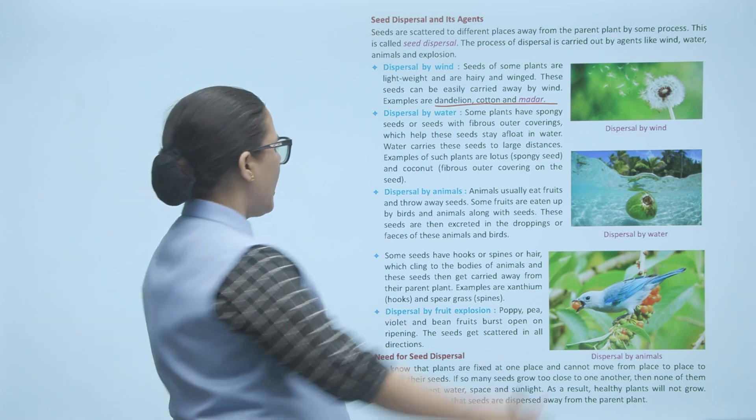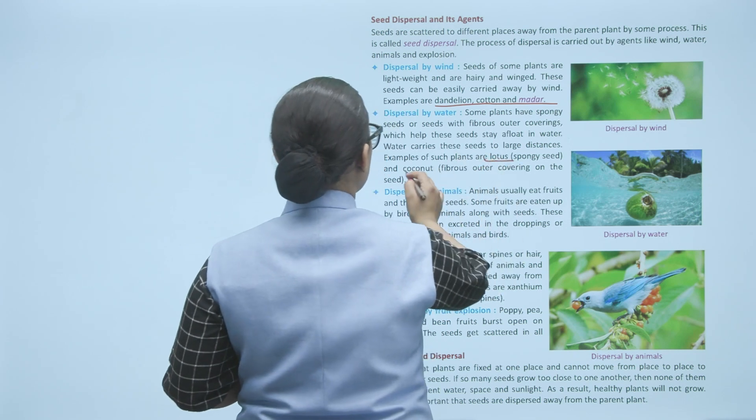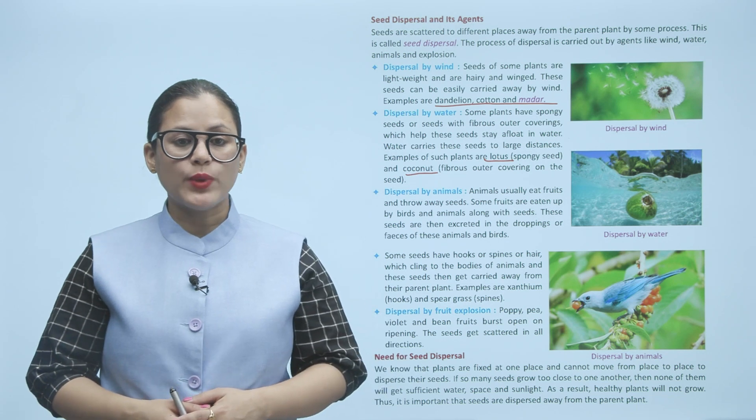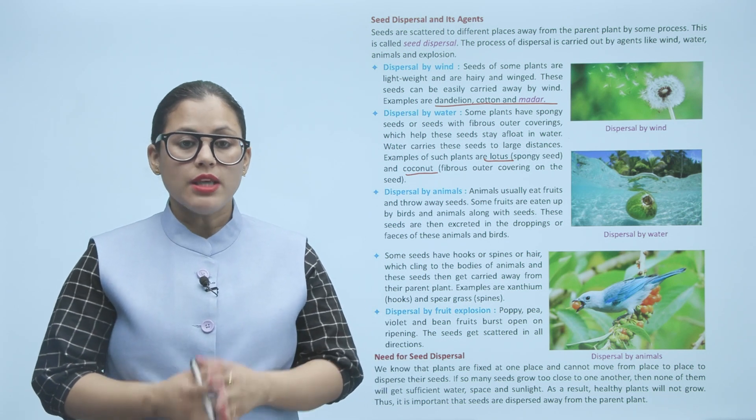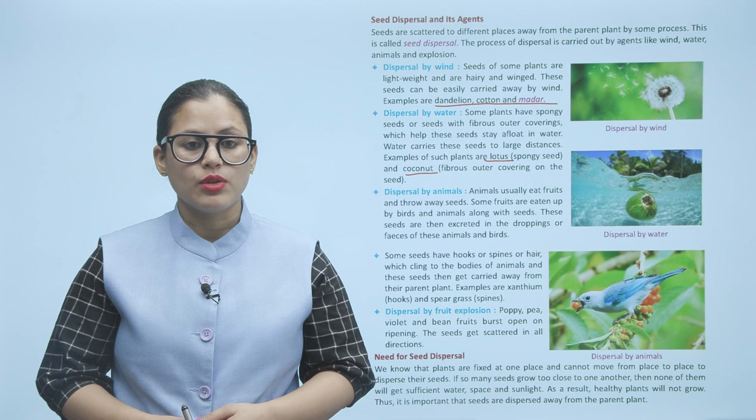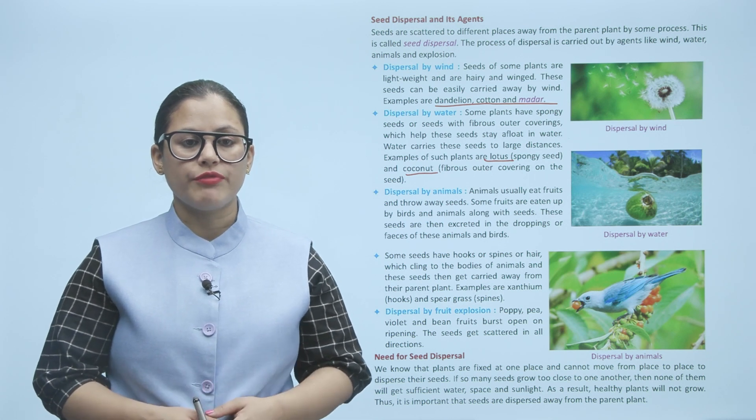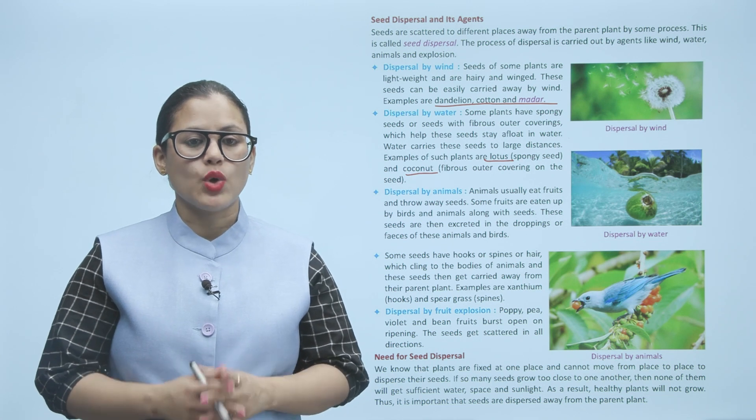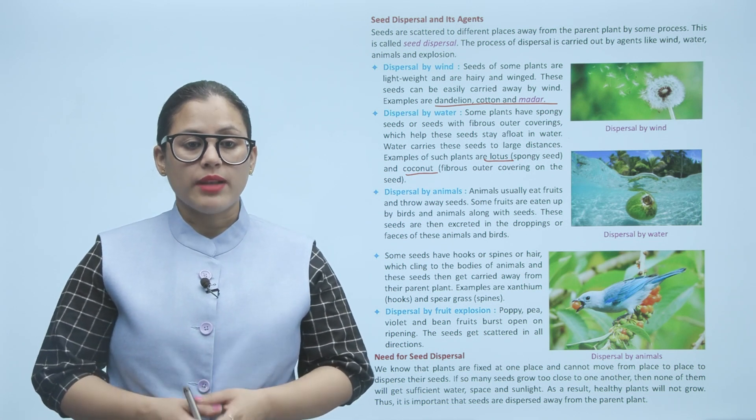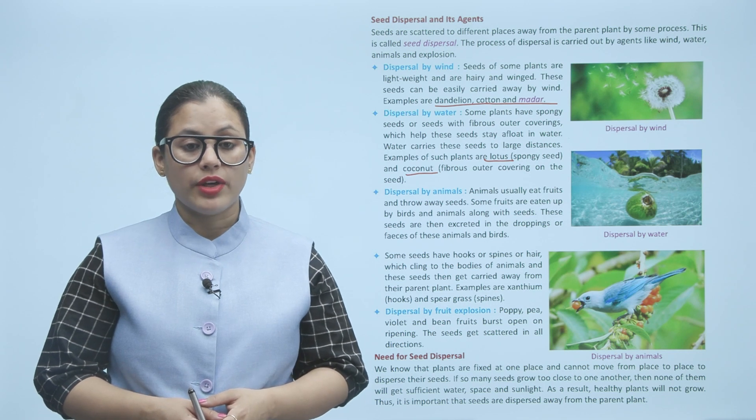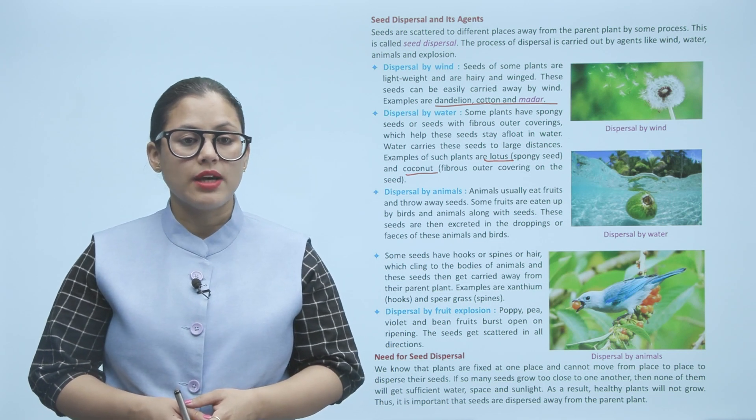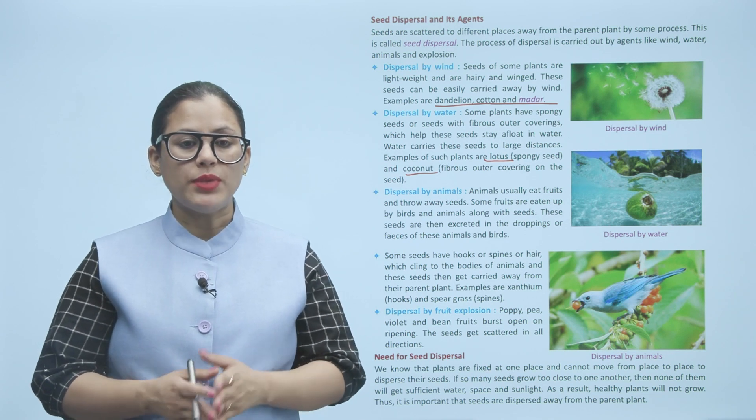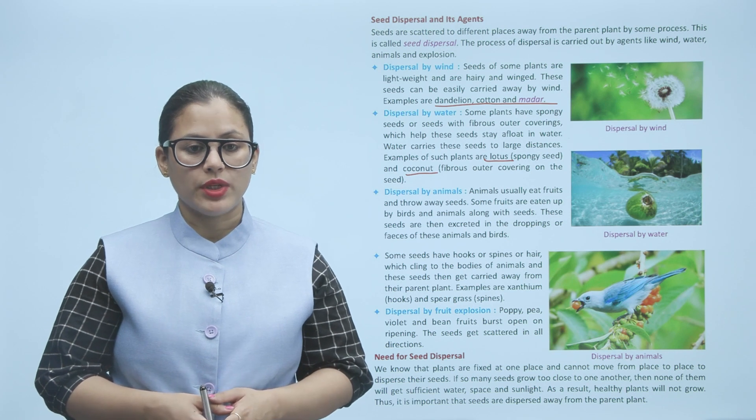Dispersal by animals: Animals usually eat fruit and throw away seeds. Some fruits are eaten up by birds and animals along with seeds. These seeds are then excreted in the droppings or feces of these animals and birds. Some seeds have hooks, spines, or hair which cling to the bodies of animals.